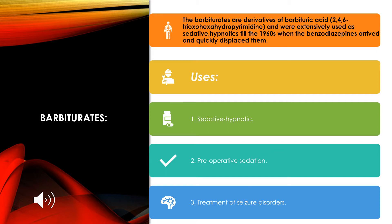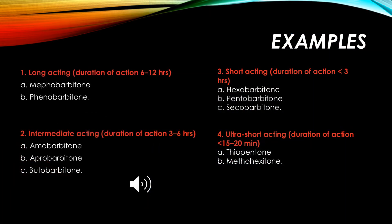The uses of barbiturates include sedative and hypnotic function, preoperative sedation, and treatment of seizure disorders. Depending upon their duration of action, barbiturates are classified into long-acting, short-acting, intermediate, and ultra short-acting types. Examples include Phenobarbitone, Hexobarbitone, Amobarbitone, and Thiopentone for each respective class.